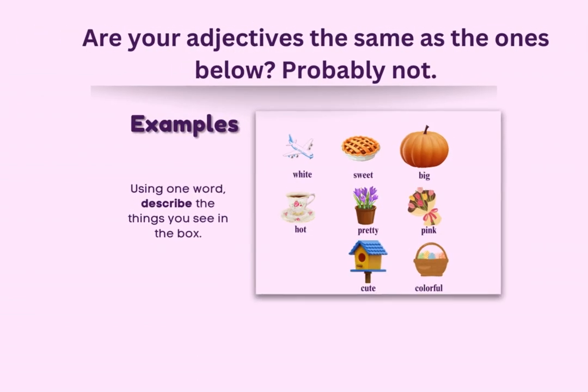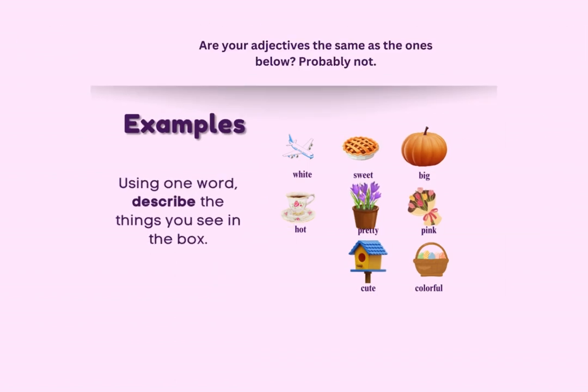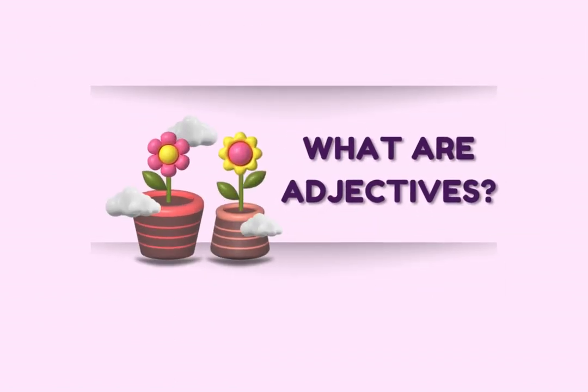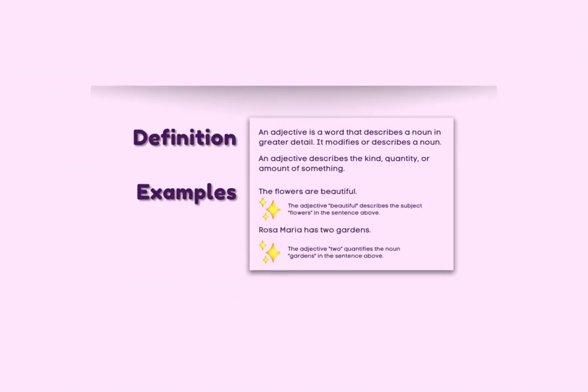Did you say the same word? Probably not, which partly explains why adjectives are so important. What are adjectives? An adjective is a word that describes a noun in greater detail. It modifies or describes a noun or pronoun. An adjective describes the kind, quantity, or amount of something. For example: 'The flowers are beautiful' — the word 'beautiful' describes flowers. 'Rosa Maria has two gardens' — the adjective 'two' quantifies or describes the noun 'gardens.'